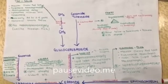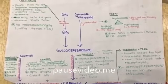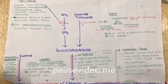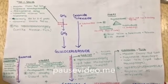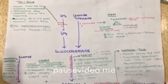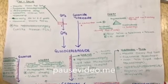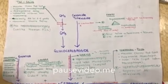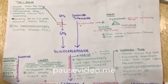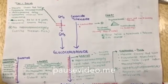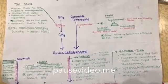To summarize: Tay-Sachs Disease features a macular cherry red spot, progressive neurodegeneration, lysosomes with onion skin appearance, abnormal startle reflex, and no hepatosplenomegaly. In Niemann-Pick Disease: cherry red spot with progressive neurodegeneration, foam cells, hepatosplenomegaly, and regression of milestones.